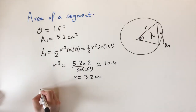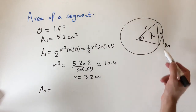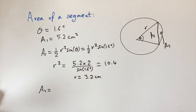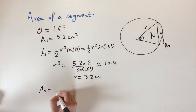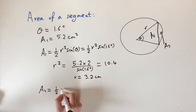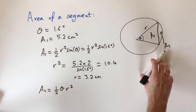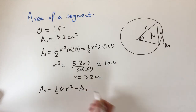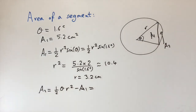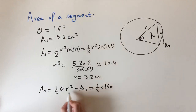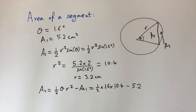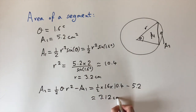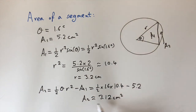Now that we have both the radius and the angle, we can find A2. The area of the sector equals A1 + A2 = (1/2) θ r². So A2 = (1/2) × 1.6 × r² − A1 = (1/2) × 1.6 × 10.4 − 5.2. Putting this into a calculator gives approximately 3.12 centimeters squared, which is the area of the segment.